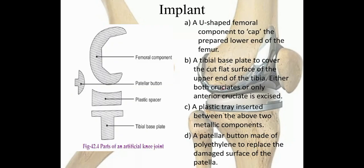The components of the implant used for TKR include the femoral component, the patellar button, the plastic spacer, and the tibial base plate. A U-shaped femoral component caps the lower end of the femur; a tibial base plate covers the cut flat surface of the upper tibia. Either both cruciates or only the anterior cruciate is excised. A plastic tray is inserted between the two metallic components, and a patellar button made of polyethylene replaces the damaged surface of the patella.